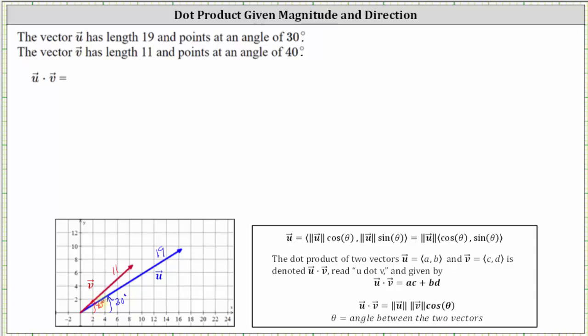Looking at the graph, we can see the angle between the two vectors is equal to 40 degrees minus 30 degrees, or 10 degrees, which is this small angle here.